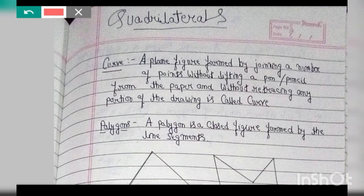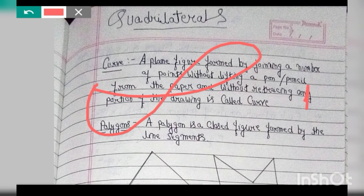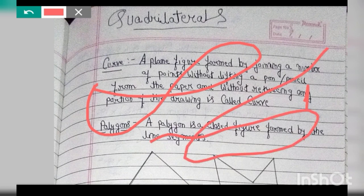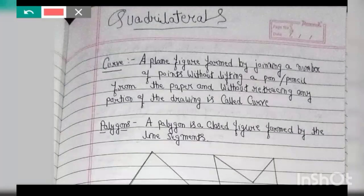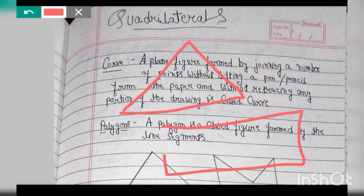Now, what does this mean? This means that any curve is a figure that we draw on a page without lifting a pen or pencil. So let's say I have a figure made here — this is a curve. I have drawn a curve without lifting a pen or pencil. Any figure, whether it is open or closed, that we can draw without lifting a pen or pencil is a curve.